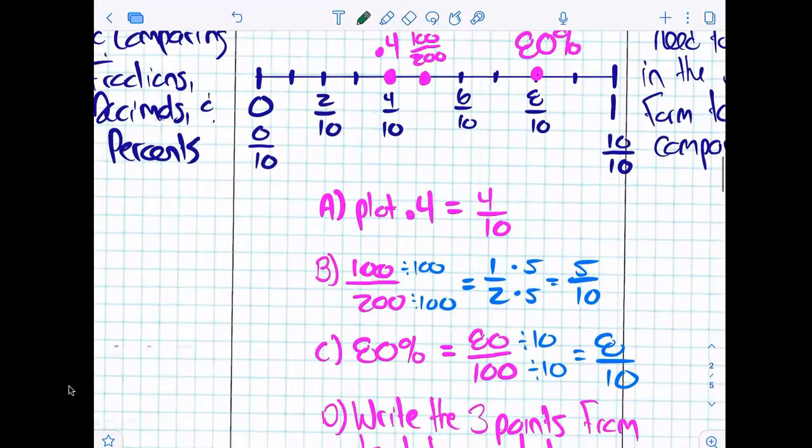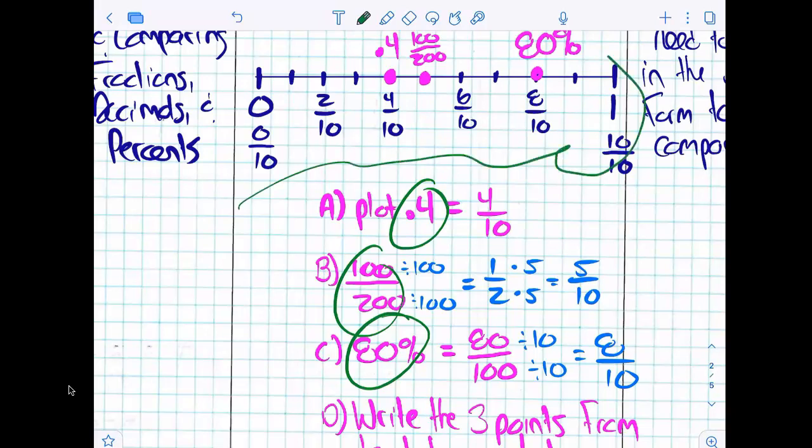All right, here we go. I have three numbers: four tenths, 100 over 200, and 80%. I need to put them on this number line right here. This number line is using what for its tick marks? Fractions, right?